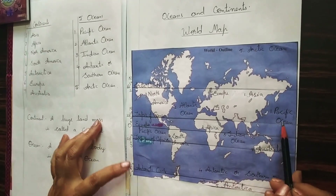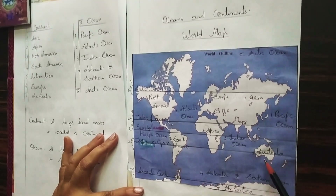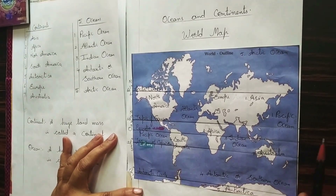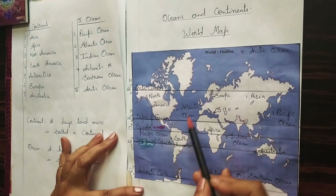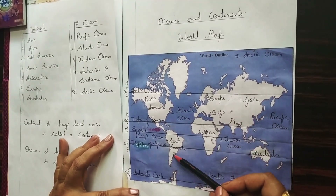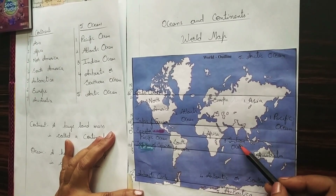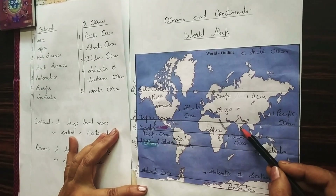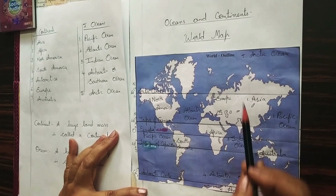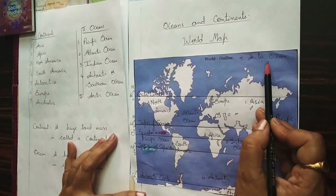The Pacific Ocean is the largest and deepest ocean. It separates Asia, Australia, North America, and South America. The Atlantic Ocean is shown in the shape of an S; it separates North America, South America, Europe, and Africa. The Indian Ocean is the third largest and is located below India. The Antarctic or Southern Ocean is the fourth. The Arctic Ocean, located in the extreme north, is the smallest ocean.